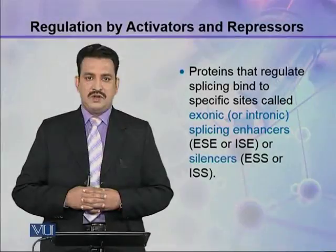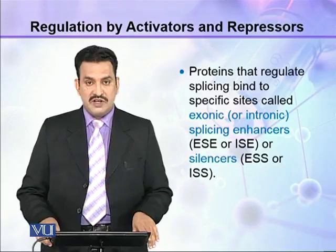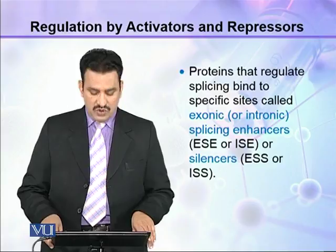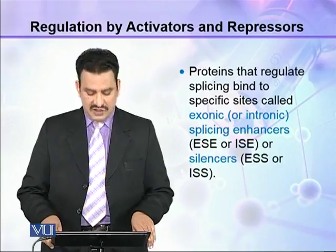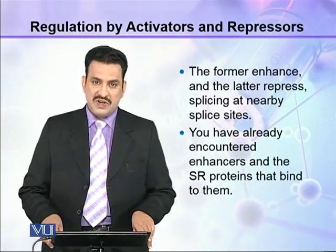Let us now see how splicing is regulated by different activators and repressors. Proteins that regulate splicing bind to specific sites called exonic or intronic splicing enhancers — ESE or ISE — or exonic or intronic silencers — ESS or ISS. The former enhance and the latter repress splicing at nearby splice sites.